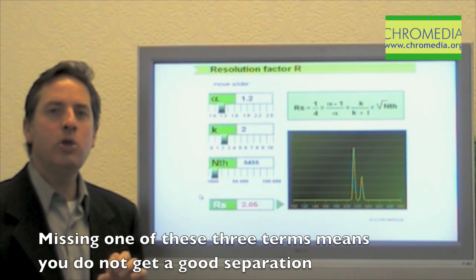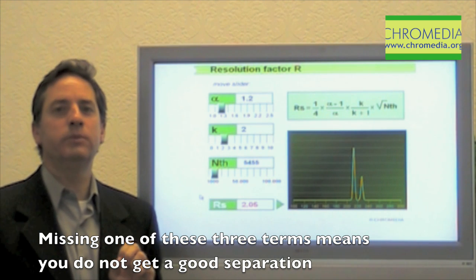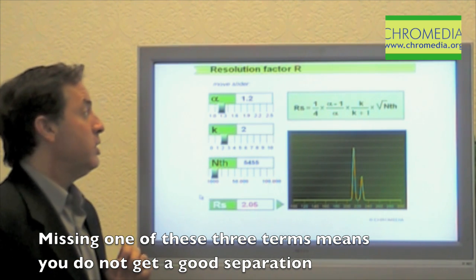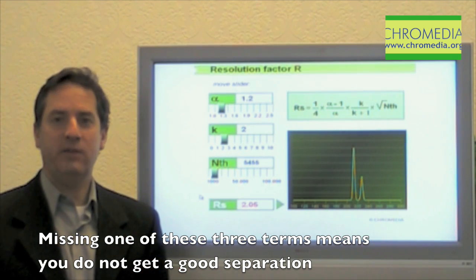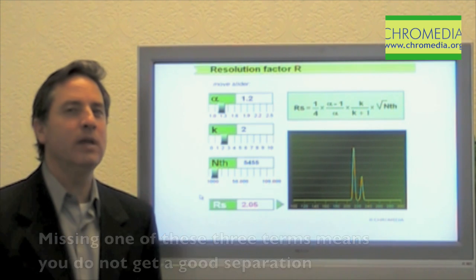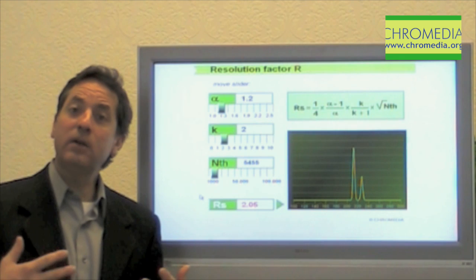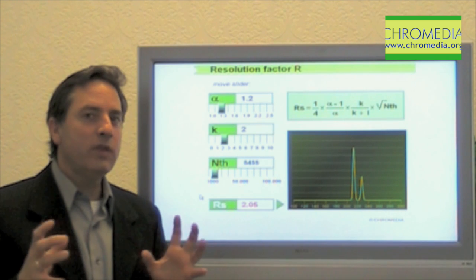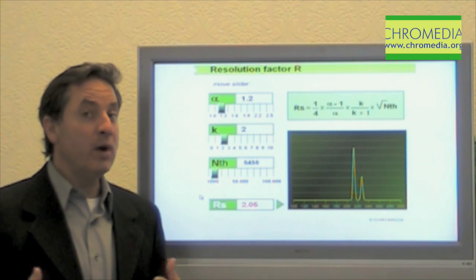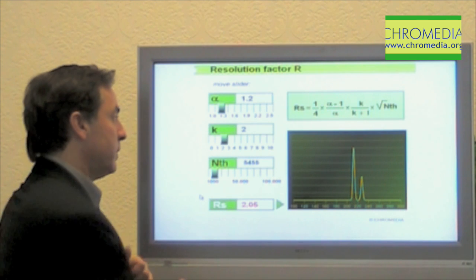But let me show you that if you're missing any one of those terms, the separation does not work. So for instance, if I do not have the correct capacity factor. Capacity factor is essentially the amount of time that your analytes interact with the stationary phase. That's the only thing going on in chromatography. If you get no interaction with the stationary phase, we get no separation.